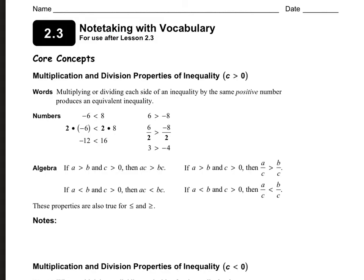Looking at your journals, we're going to start on page 40. This is the core concept we just discovered. If you have something that's true — in this case, negative 6 is less than 8 — and you multiply by a positive number, it's going to stay the same; it's still going to be less than. If A is greater than B and you multiply by a number greater than 0, the sign does not change. That works for greater than, less than, greater than or equal to, and less than or equal to — and it works for multiplication and division.